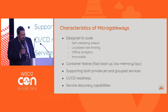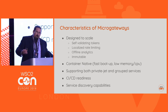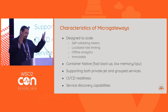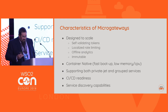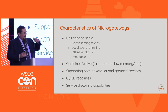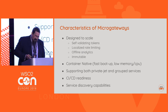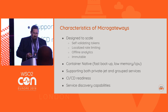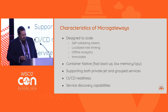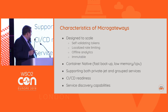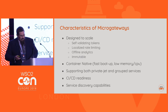For the models, you can have the private jet model where you've got one microservice, one gateway, or you can have a gateway serving a bounded context. That leads into some of the talks around the cell architecture and how a gateway can front a group of services and present that to the outside world. It needs to be CI/CD ready — easily fits into an automated delivery pipeline — and needs to have service discovery capabilities.